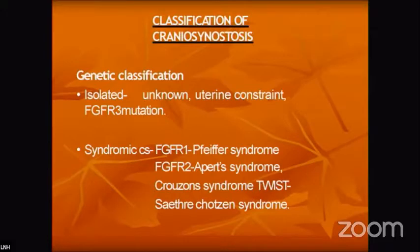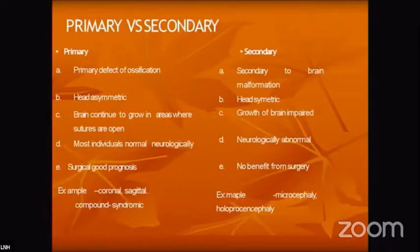In syndromic cases, there is always an FGFR1 growth factor present, as seen in Pfeiffer syndrome, Apert syndrome, and Crouzon syndrome. In the primary versus secondary classification, primary stenosis means the inside brain is weak and has no capacity to develop, causing the suture to close prematurely.